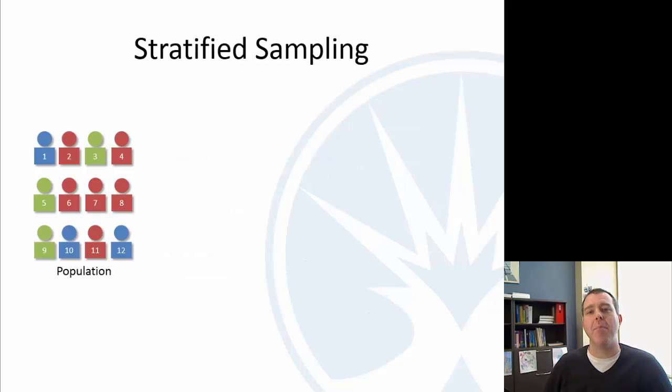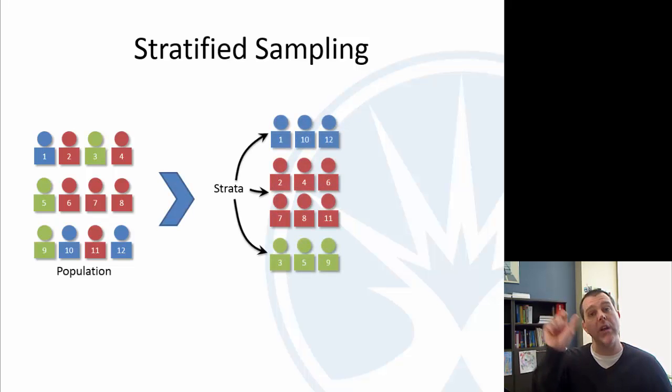So, stratified sampling is, there might be some particular characteristic I'm interested in, and I want to make sure that I get a proportional number of my population from each of those categories. So, what I would do here is, I would take my population and split it up according to that strata, whatever that would be, in this case, my fancy people icons here, it would be color. And so now, if I still want a sample size of 4, in order to make it proportional, I would choose 1 from the blue, 2 from the red, and 1 from the green, and I would again do that randomly.